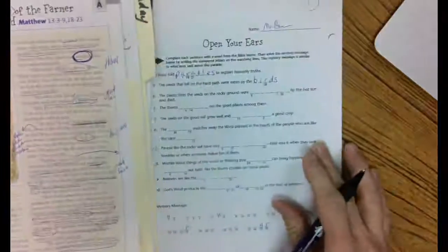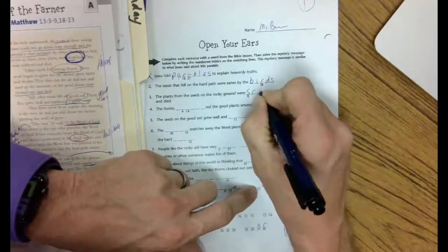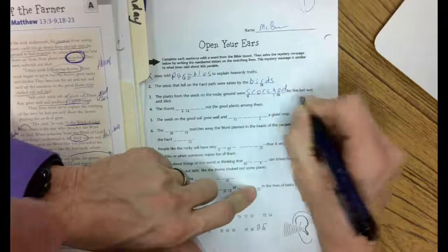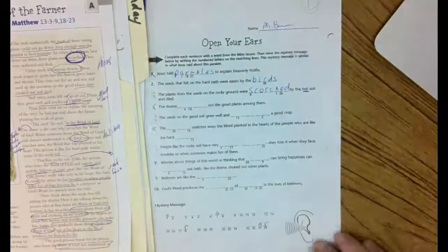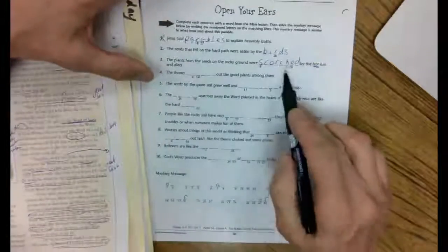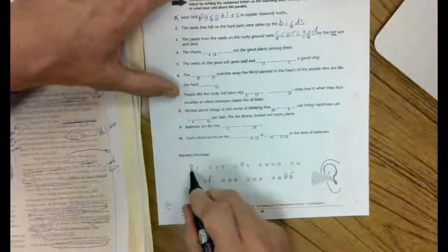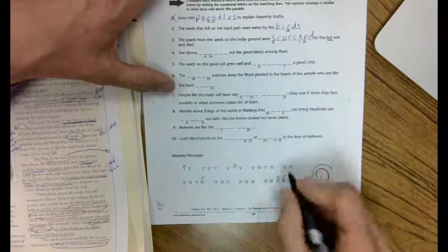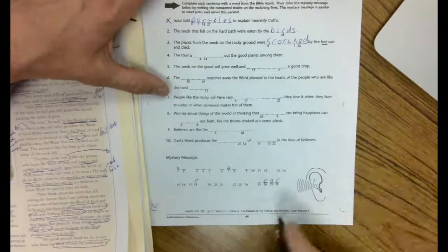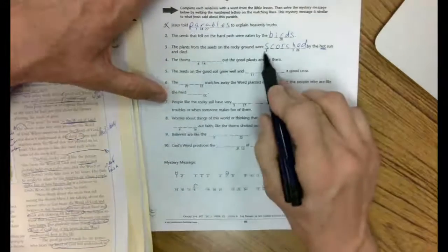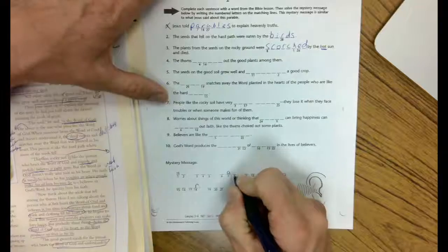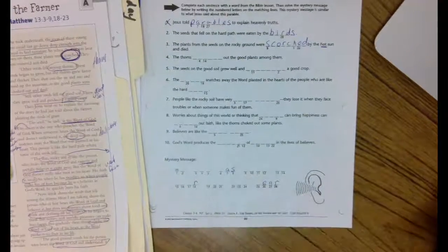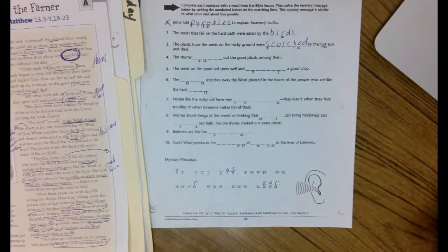Let's make sure we spell it correctly. Scorched, S-C-O-R-C-H-E-D. Scorched by the hot sun. All right, three letters in this one. Number one is an H. Oh, they did that one for us. Number 26 is an E. I think I know what this word is now. And number eight is an S. I think I know what this word is now, too. Let's keep going.